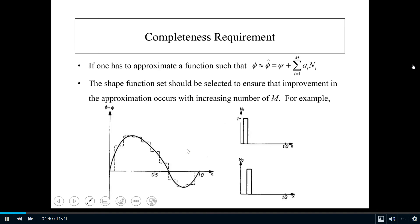For example, look at this curve which is some function, and we want to approximate this function using something like a constant shape function for each segment or element. If you use enough number of elements, the approximation may improve. If you increase the number of elements—that is, the size of element is getting smaller and smaller—you may be able to get a converged solution close to this one. In this case, this shape function has completeness property. The shape function set should be selected to ensure that improvement in approximation occurs with increasing number of elements or M.